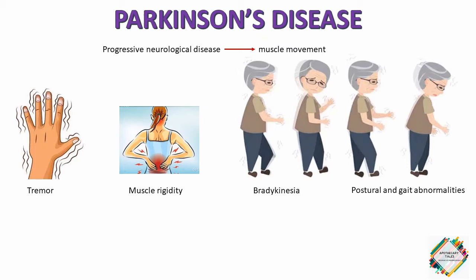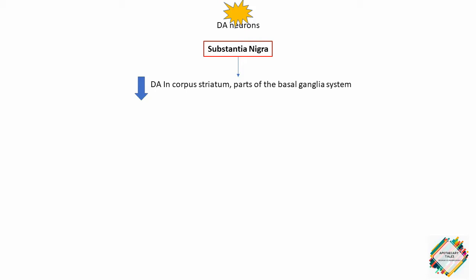The exact cause of Parkinson's disease is usually unknown for most patients. It is being correlated with destruction of dopaminergic neurons in the substantia nigra, with the consequent reduction of dopamine actions in the corpus striatum and parts of the basal ganglia system that are involved in motor control. That means when there is a destruction of dopaminergic neurons, mainly motor control is being affected.